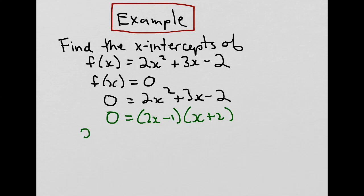Therefore, 2x - 1 equals 0, or x + 2 equals 0. Solving these equations, we would get 2x equals 1, or x equals 1/2, or x equals -2.